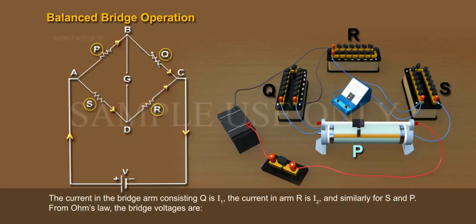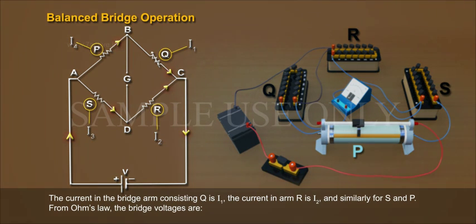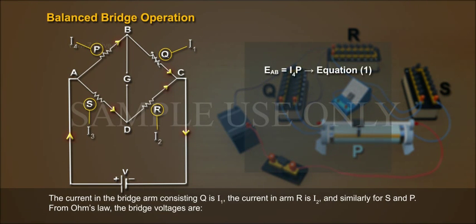The current in the bridge arm consisting Q is I1, the current in arm R is I2, and similarly for S and P. From Ohm's law, the bridge voltages are: EAB equals I4P, Equation 1; EBC equals I1Q, Equation 2.